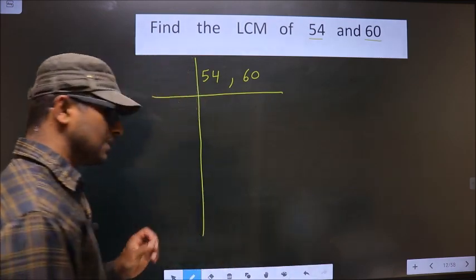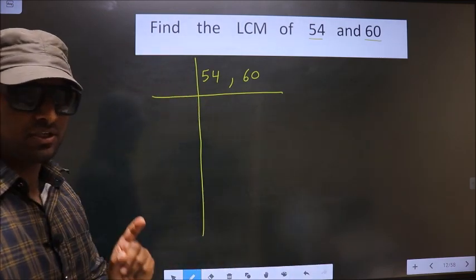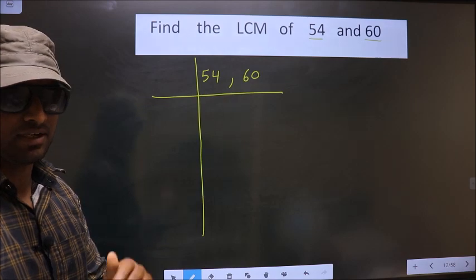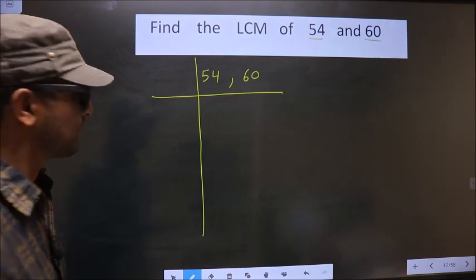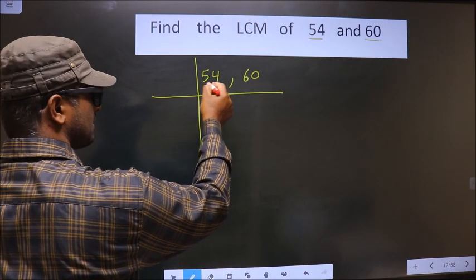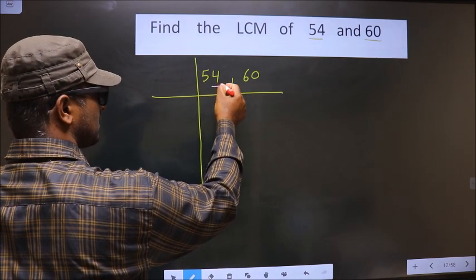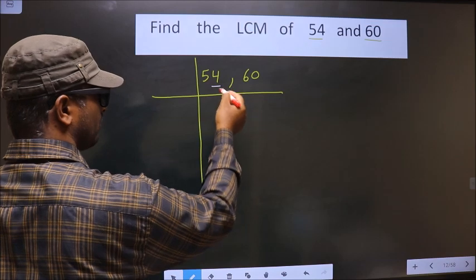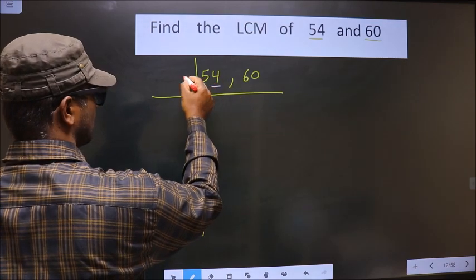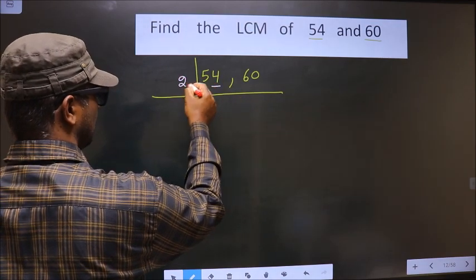This is your step 1. Next, in this number, the last digit is 4 which is even. So we take 2 here.